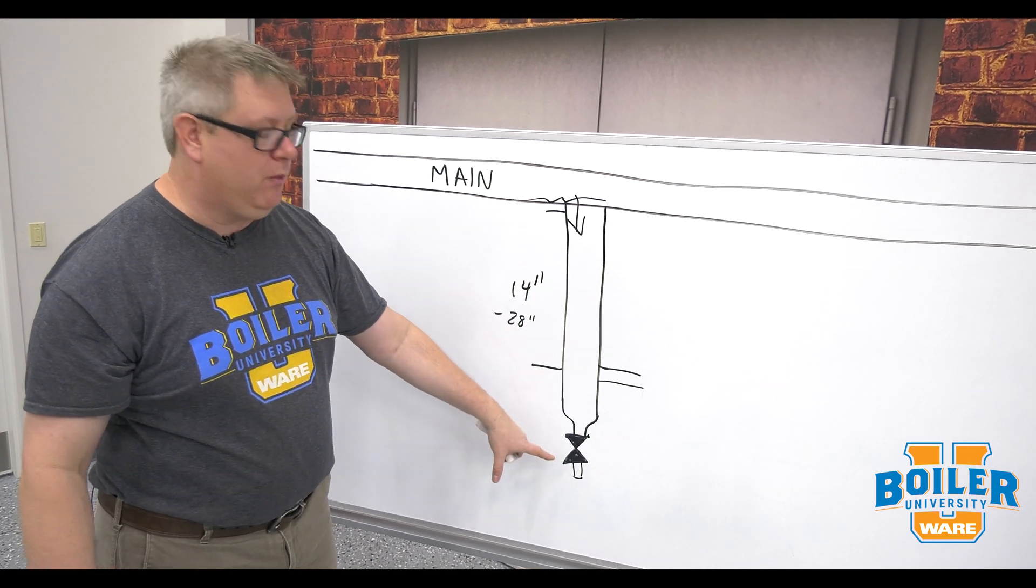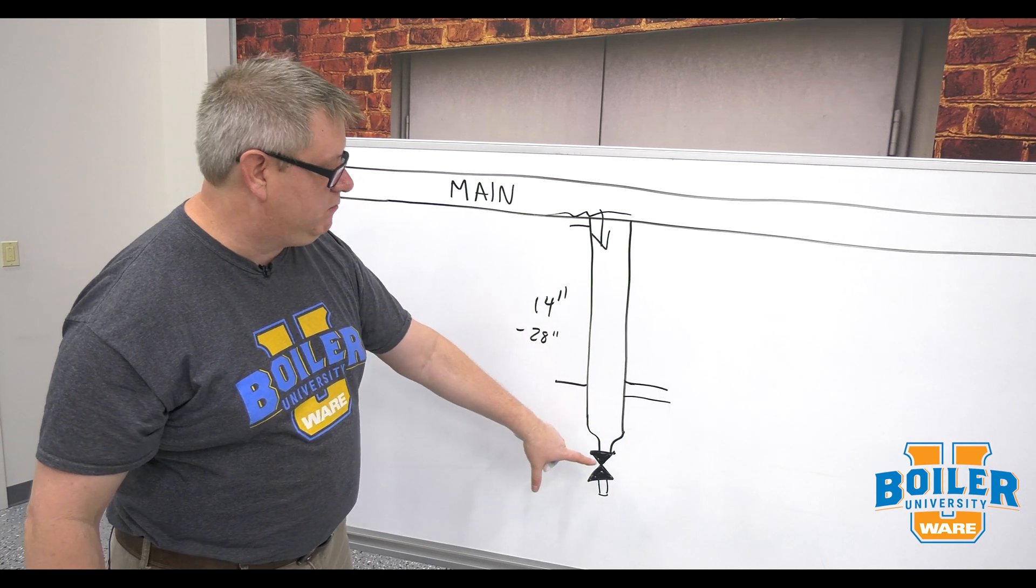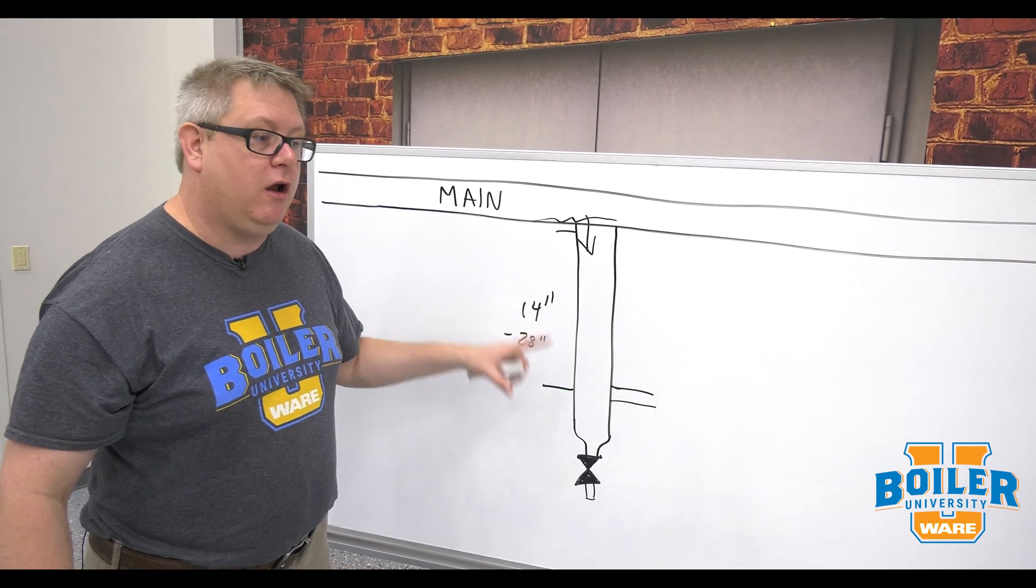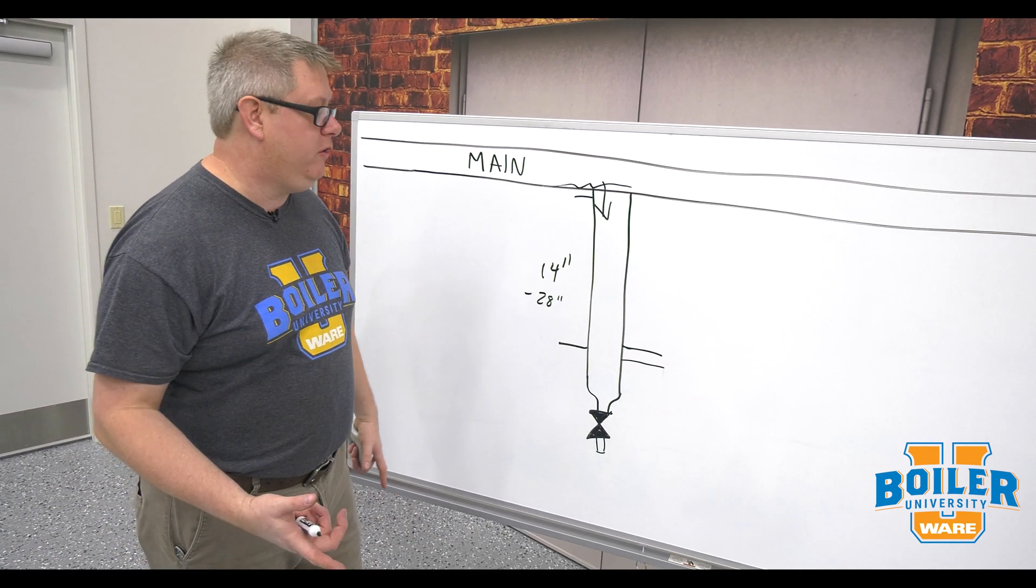So anytime we install a drip leg we want to drain at the bottom and in many cases we'll just have a drain and a plug in it but we can also pipe that down to the floor ground level to make it more useful.